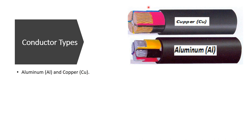This is a picture of copper and this one is for aluminum. You can see that copper usually has a golden color and aluminum has a silver color. Now we would like to understand the difference between these two conductors and when to use copper versus aluminum.